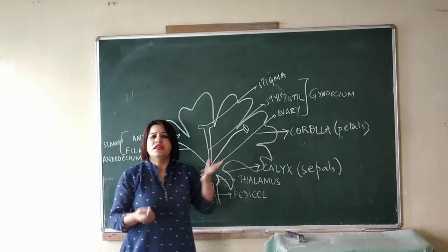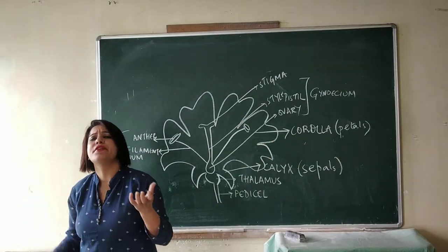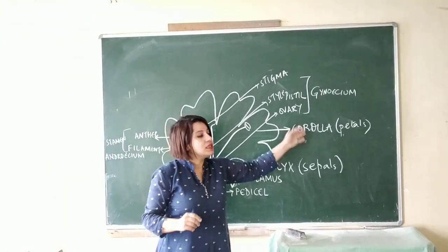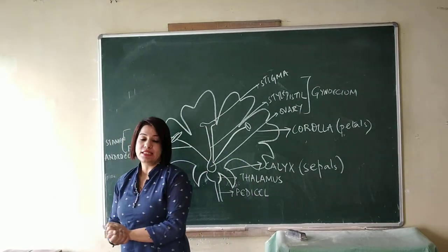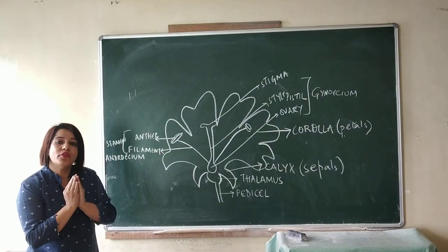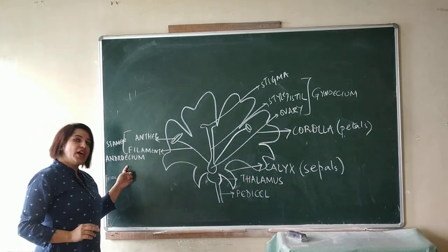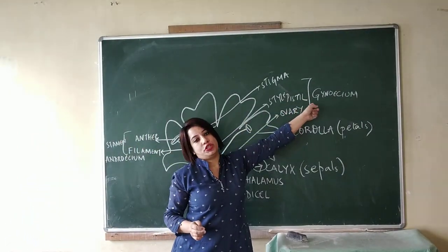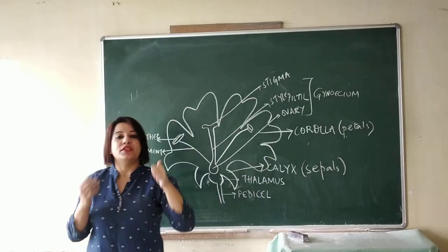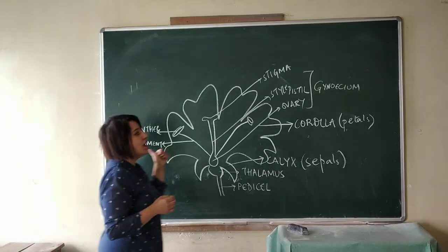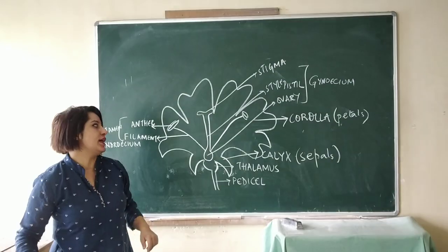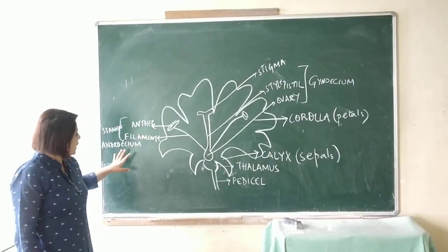Next one, corolla. It's colorful — you all know the petals are very colorful. That means they attract insects. The second function of the petals is it also provides protection to the androecium and the gynoecium. So two functions for the petals: it provides protection to the androecium and gynoecium, and it attracts insects.